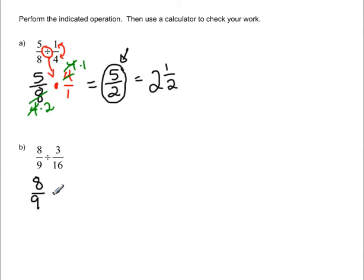So we have 8 9ths. The division is going to become multiplying. And then remember, we're going to take the reciprocal of the divisor. Always the second fraction is the one that gets flipped over. So then we have 16 over 3. And now when we look at this problem, we're saying, well, there's nothing there that's going to cancel out, right? There's no common factors between numerators and denominators.